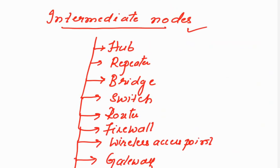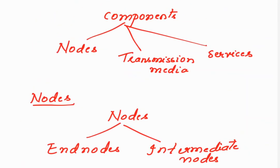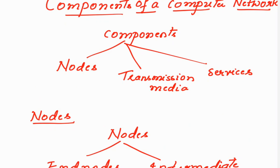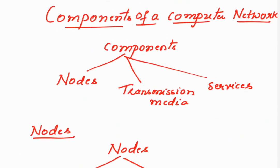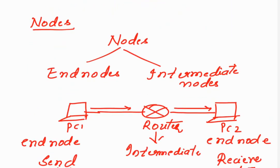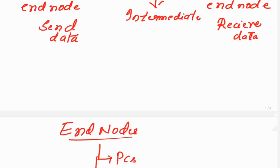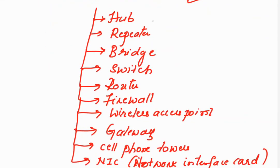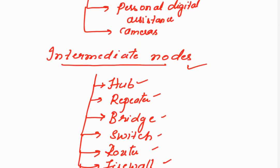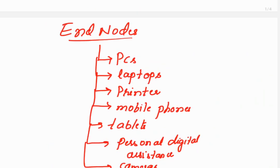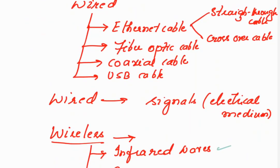This is just an introduction video for the computer networks lab. I wanted you to get an introduction to the devices used in the experiments — in detail I shall be explaining in upcoming video sessions. I will have a complete separate video on all the intermediate nodes, services, end nodes, and cables — both wired and wireless.